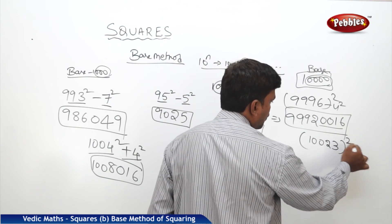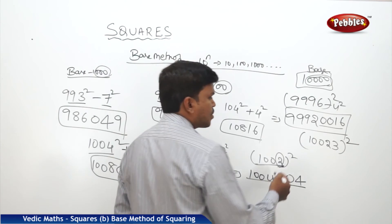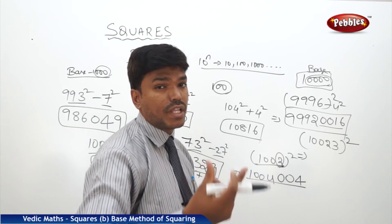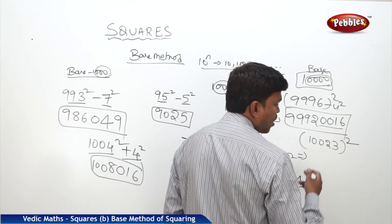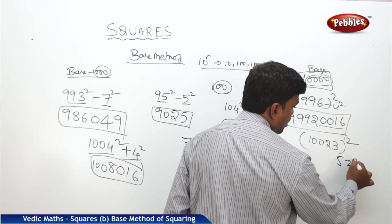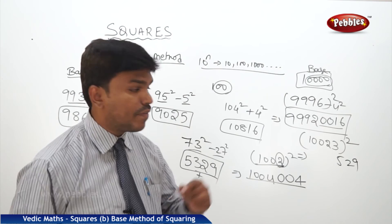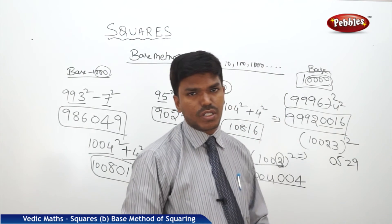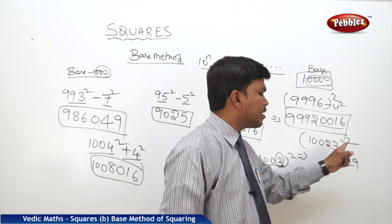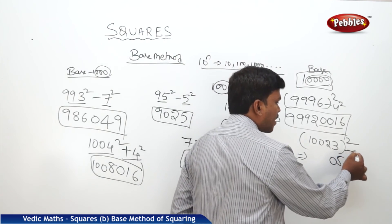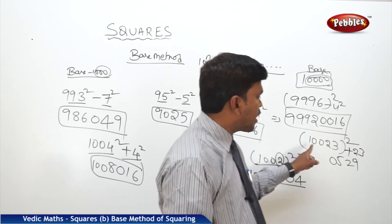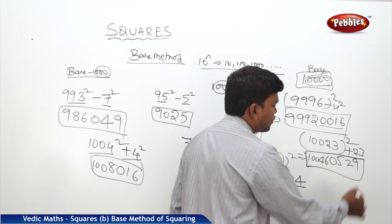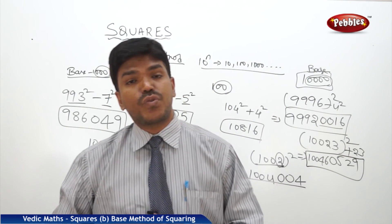I need 10,023 squared. Compare with base 10,000 — it is more by 23. What is 23 squared? 529. But we need 4 digits on the right side, so write 0529. For the left side part, add 23: 10,023 plus 23 is 10,046. So the answer is 100460529.